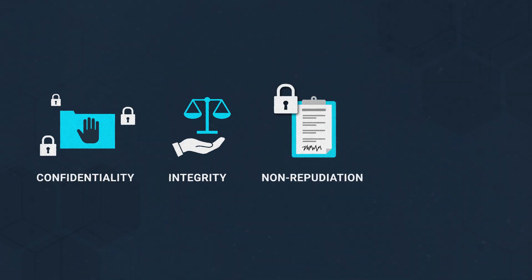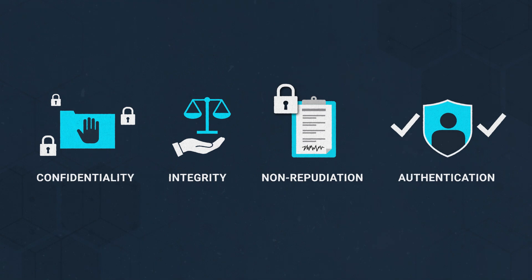Modern cryptography is based on four primary principles. Confidentiality – only the intended recipients can understand the information. Integrity – the data cannot be changed during storage or transmission without being detected. Non-repudiation – the sender cannot deny having sent the message. And authentication – the sender and receiver can confirm each other's identity and the origin and destination of the information.